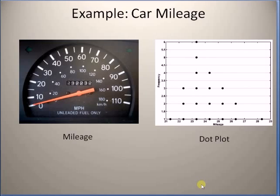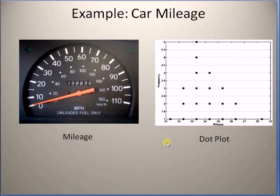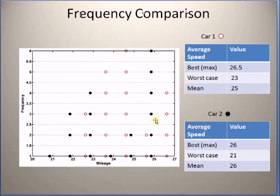A typical example is car mileage, that is the number of miles per gallon. Some types of cars give better mileage than other types. This is a visual representation of this mileage information known as a dot plot — you mark a dot at the mileage value for each occurrence. You can use these dot plots for comparing two different types of mileage profiles. If you have two cars with different mileages, you can compare their performance.